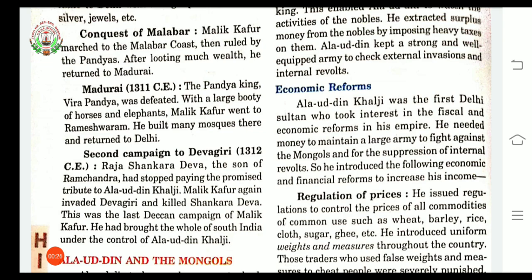Alauddin believed that all three policies could go together — those policies were consolidation, expansion, and defence. He called himself the second Alexander. His conquests may be studied under two headings: first, conquest in Northern India; second, conquest of Deccan. In every conquest, Malik Kapoor played a vital role.